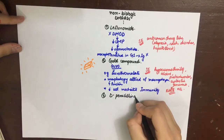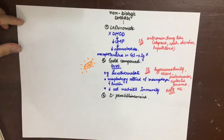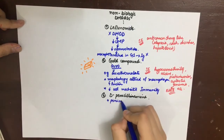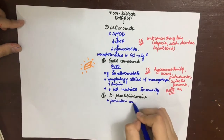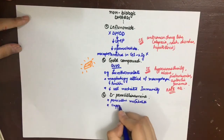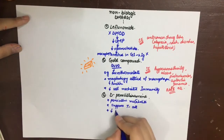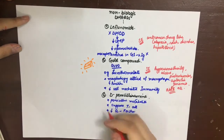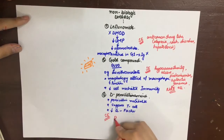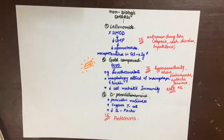The next drug is D-penicillamine. It is basically a penicillin metabolite and acts by suppressing T cells. It also suppresses the rheumatoid factor that is responsible for this disease. Side effects include proteinuria.